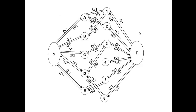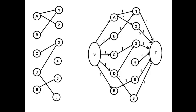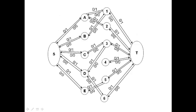Now we draw a residual graph. For every edge, just like in the Ford-Fulkerson algorithm, we have 0/1 for each forward edge, and the back edge is 0/0. We then find a path from source to sink.